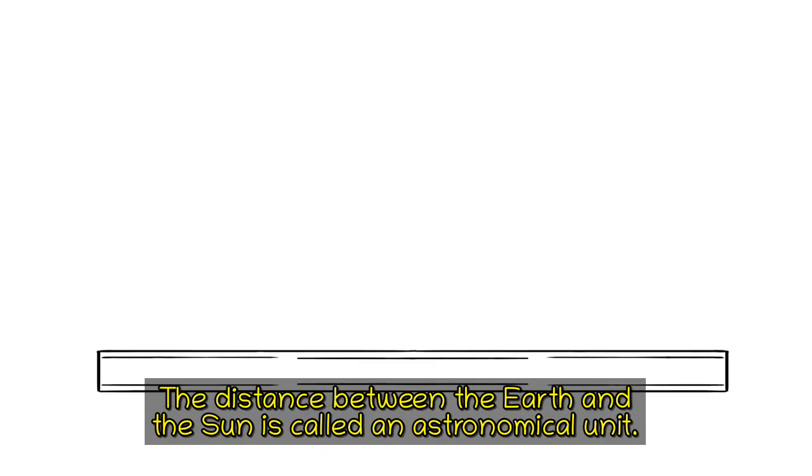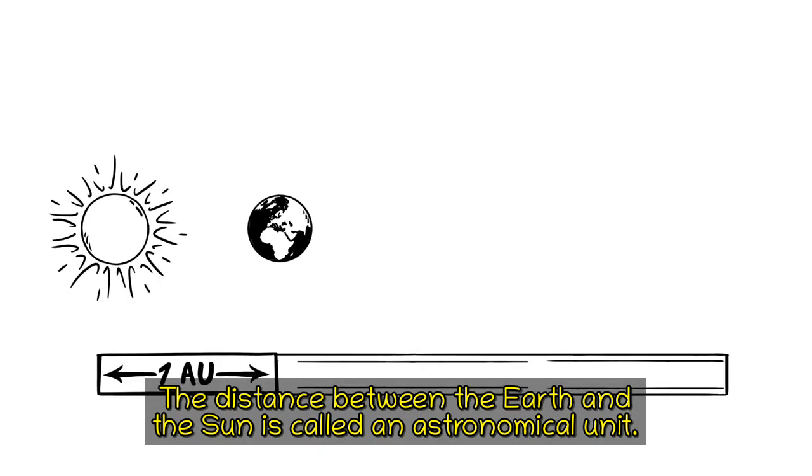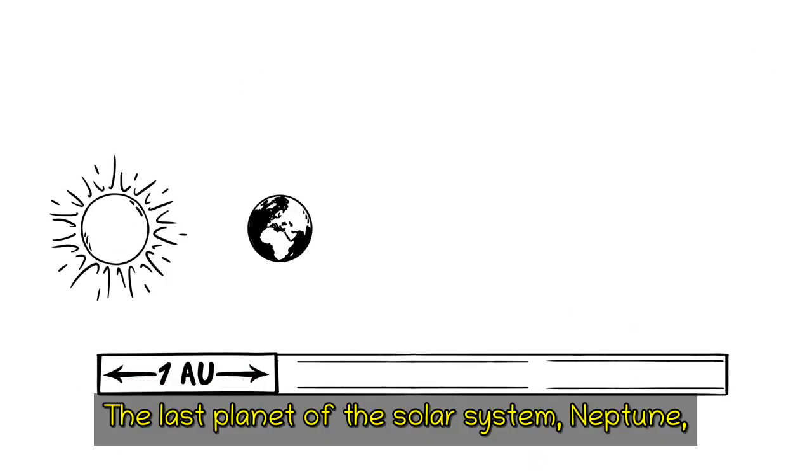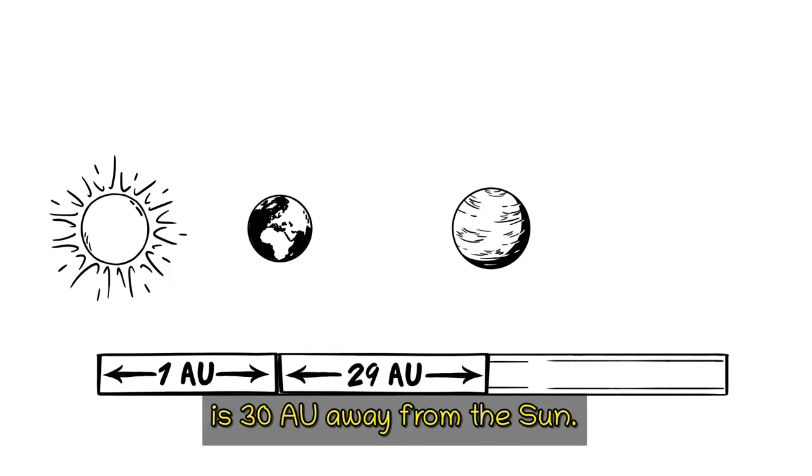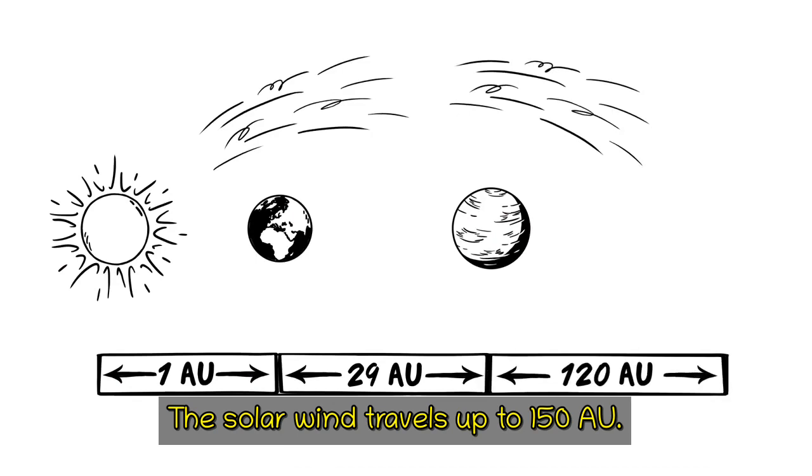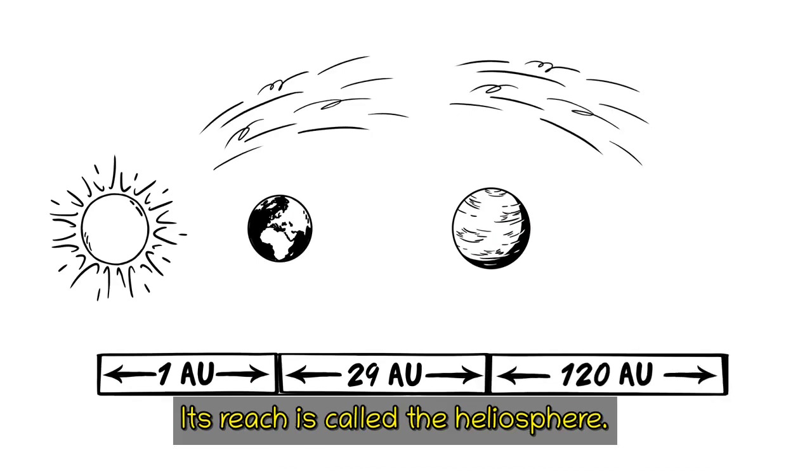The distance between the Earth and the Sun is called an astronomical unit. This entity is used to measure distances in space. The last planet of the solar system, Neptune, is 30 AU away from the Sun. The solar wind travels up to 150 AU. Its reach is called the heliosphere.